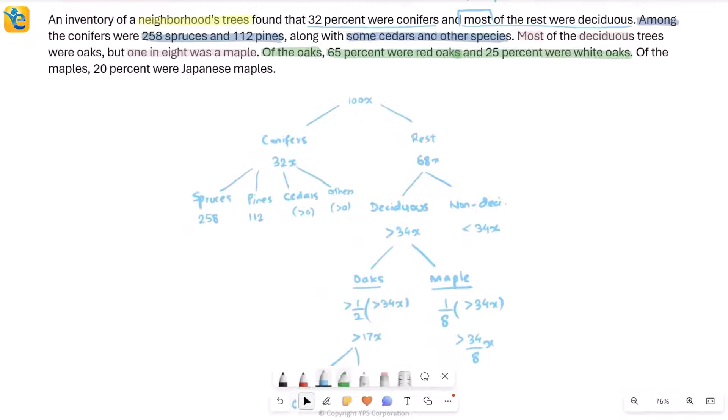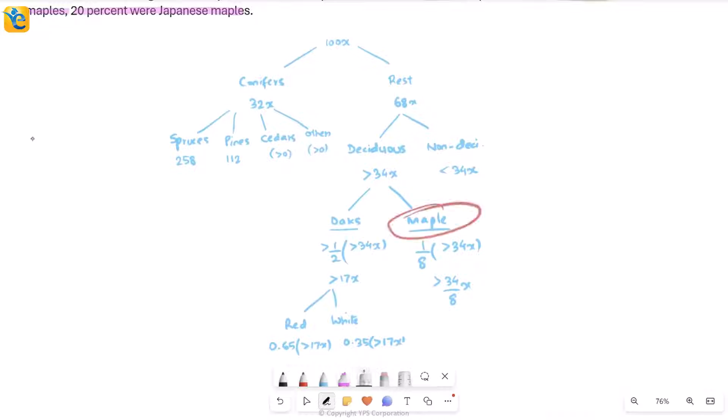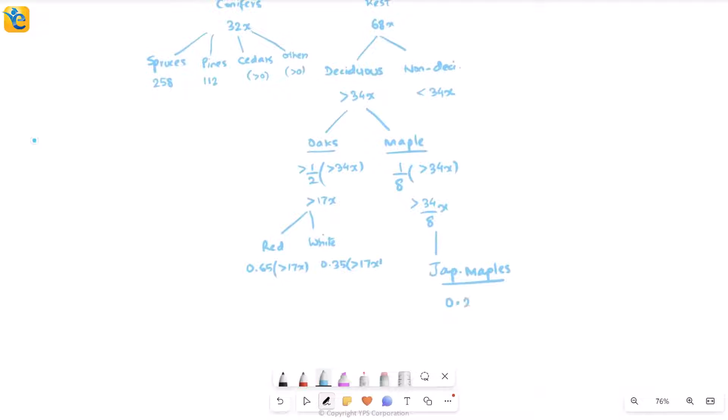Then finally, they're giving you one last piece of information, which is about the maples, that of the maples, 20% were Japanese maples. So now I am in this side of the maples and within this category, they're saying you take 20% of this number to get Japanese maples. How do I represent that? That 20% is simply going to be 0.2 times this thing, which itself is a range.